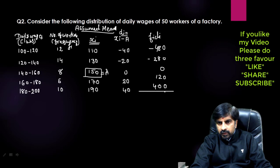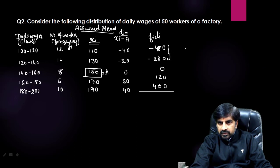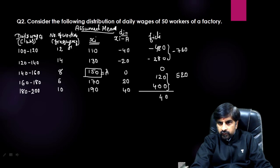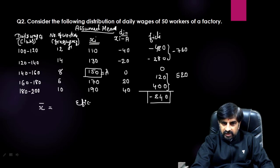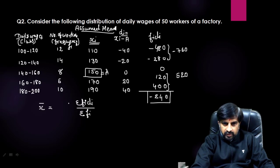Adding the fi×di values: the negative terms give −160 and the positive terms give +520, so the net Σ(fi×di) = −240. The formula for the assumed mean method is: x̄ = A + Σ(fi×di) / Σfi. Here we had subtracted A from all xi terms to get di, so now we add A back.